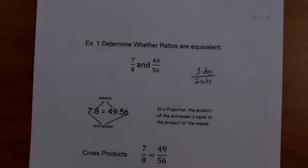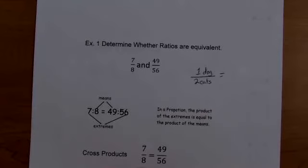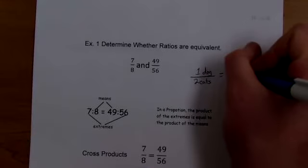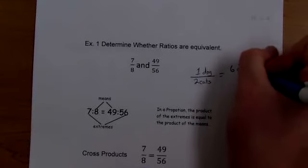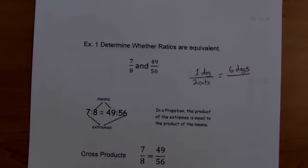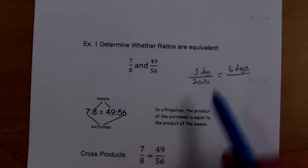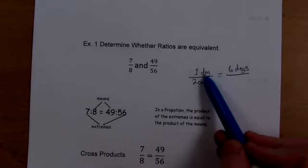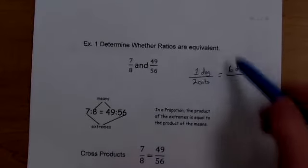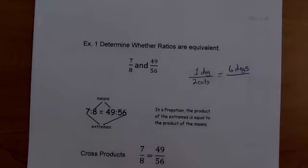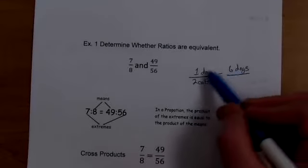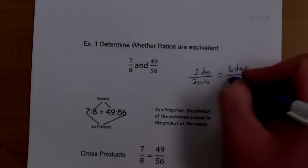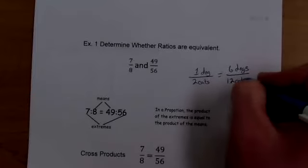So if we have equivalent—equivalent means the same—an equivalent ratio would be, if there was six dogs, how many cats would there be? Well, if we want to stay equivalent or the same, if we always have one dog to two cats, basically what it means is we need to double the number. So if I have six dogs, that means I would need 12 cats.